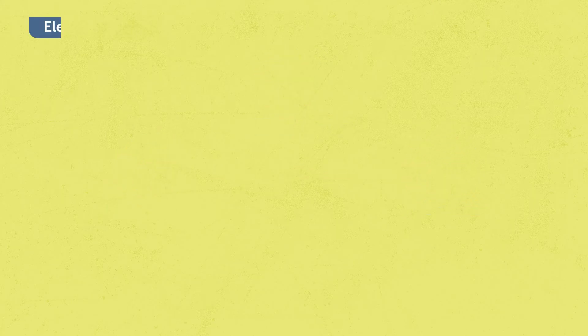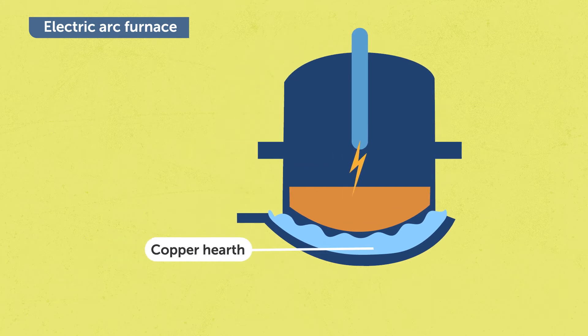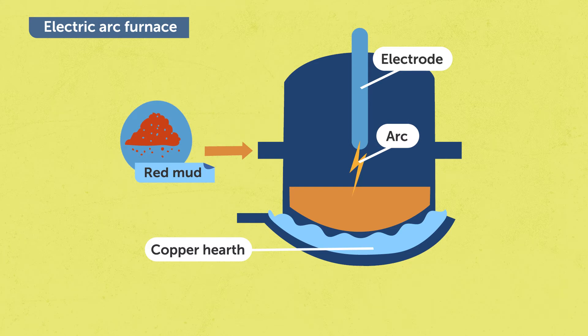For that, we use a conventional electric arc furnace, which is equipped with a water-cooled copper hearth, where we introduce the material to be processed, and an electrode sitting right above the material. We then ignite an electric arc between the tip of the electrode and the material to be processed.